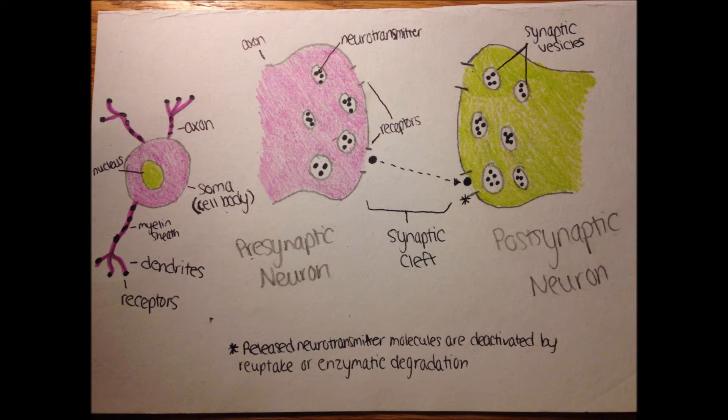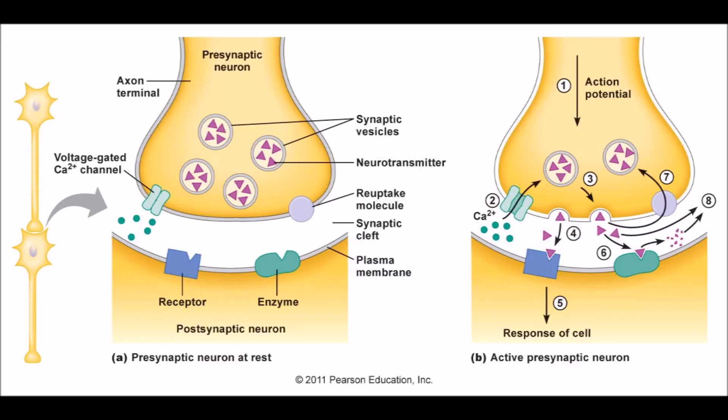Neurotransmission is the process by which neurotransmitters are released by the presynaptic neuron and bind to and activate the receptors of the postsynaptic neuron. The process begins with a threshold action potential where a neurotransmitter is released at the presynaptic neuron. Neurotransmitter molecules are synthesized under the influence of enzymes and stored in vesicles before the action potential happens. The action potential causes the vesicles to fuse with the presynaptic membrane and release their neurotransmitter molecules into the synapse.